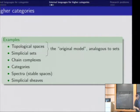Or categories where the higher morphisms are natural transformations, and maybe higher versions of those, or spectra, simplicial sheaves. All these things are all over the place nowadays. Topological spaces and simplicial sets, which are equivalent as a higher category, give us the original model, which is sort of the higher category, which is analogous to the category of sets.